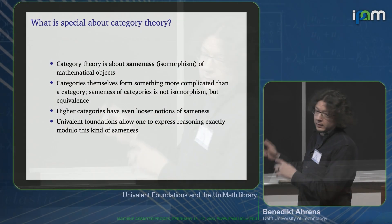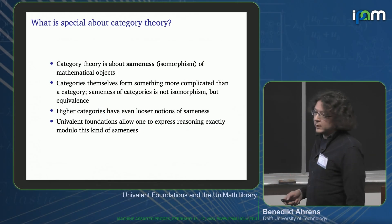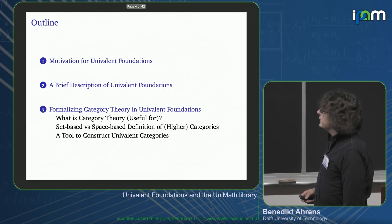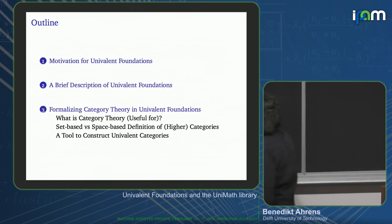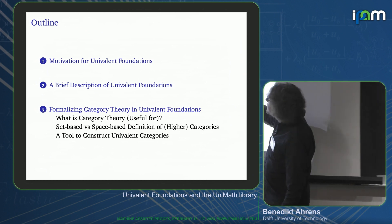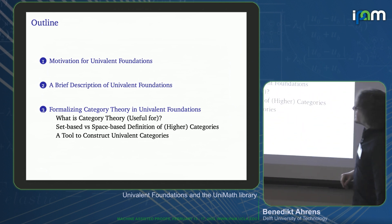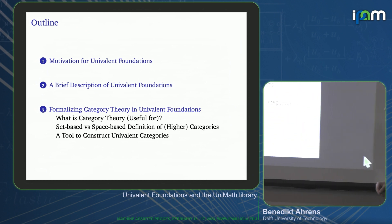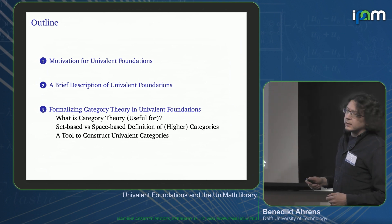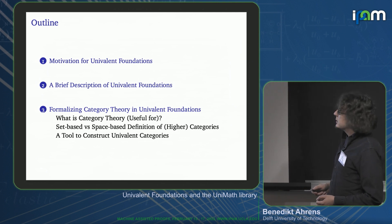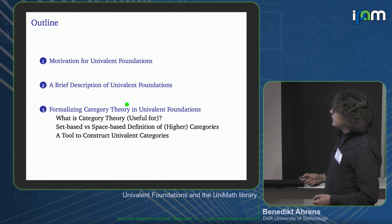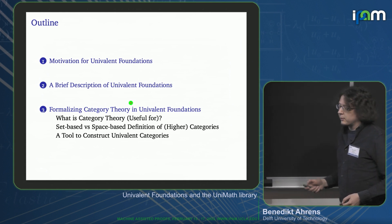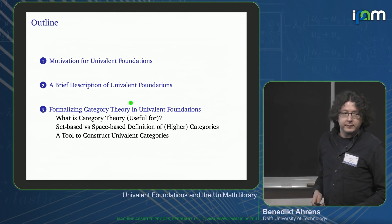So there's an evolving notion of sameness between mathematical objects, and univalent foundations allows one to express reasoning exactly modulo the appropriate notion of sameness. Sounds very abstract so far — hopefully it will be more concrete at the end. I have three topics: motivation for univalent foundations, a brief technical description of what univalent foundations are, and how to formalize category theory in univalent foundations.